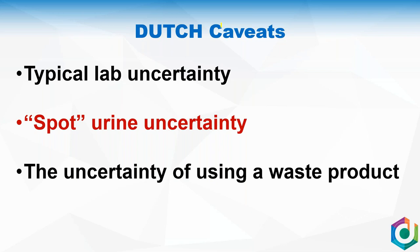Let's get into the two main categories: spot urine uncertainty, and the uncertainty of using a waste product. A lot of people say, 'I don't know about dried urine — is that valid?' Using a dried sample is actually a piece of cake; the correlation between liquid and dried is really good. It's not the drying that's the issue — it's the fact that it's a spot urine sample rather than a 24-hour urine sample, and there's some uncertainty with that we need to address.